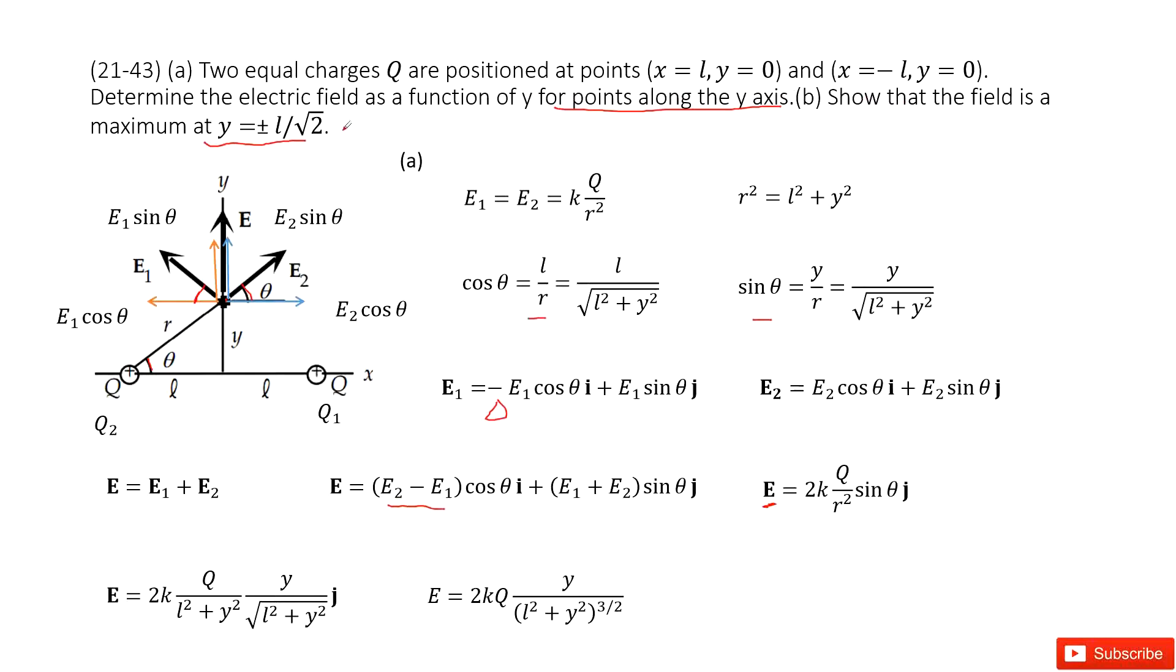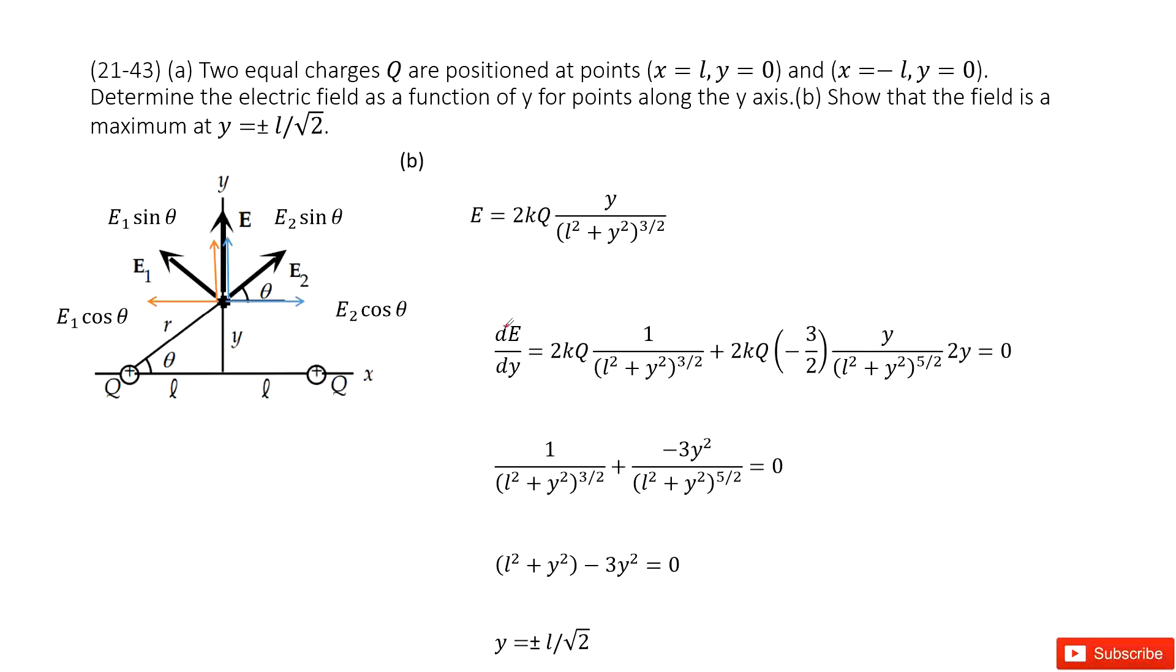Now part B, we need to find the position where the electric field is maximum. For this function, y is the independent variable, E is the dependent variable, and k, q, L are constants. To find the position y to make E maximum, we do derivation. We take dE over dy and set the derivative equal to zero. We get this function and simplify it. The 2kq terms cancel.